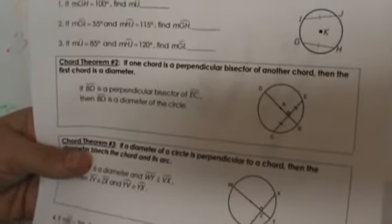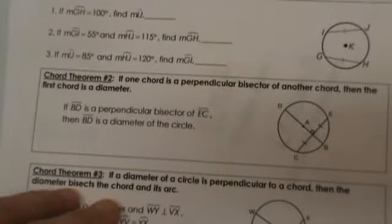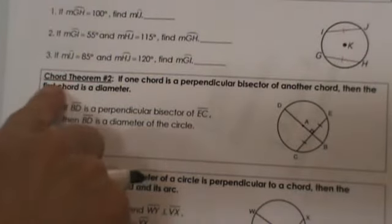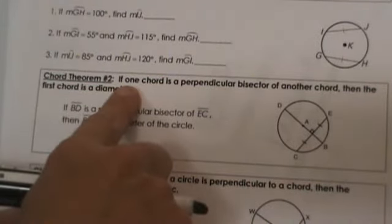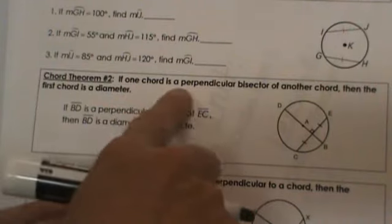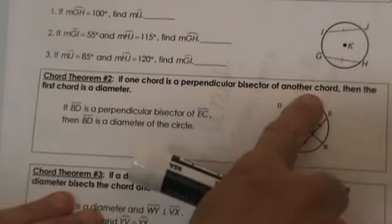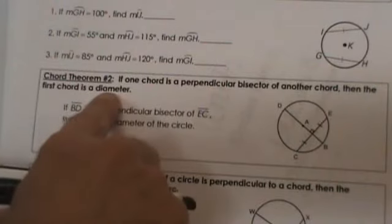Now let's look at the second theorem. The second theorem actually goes with the third one. They are basically giving the opposite information. So once you understand one you actually have both of them. The chord theorem says if one chord is a perpendicular bisector of another chord then the first chord is a diameter.